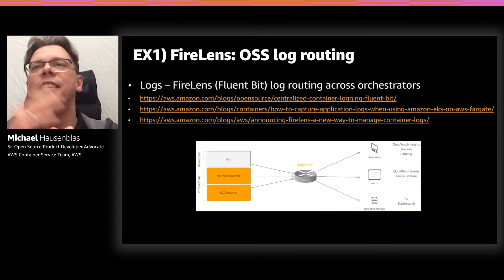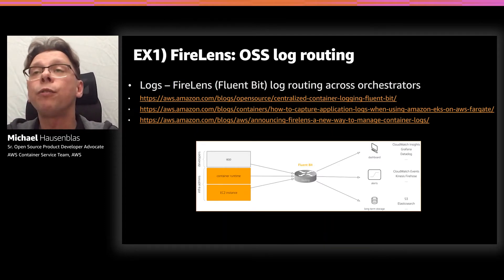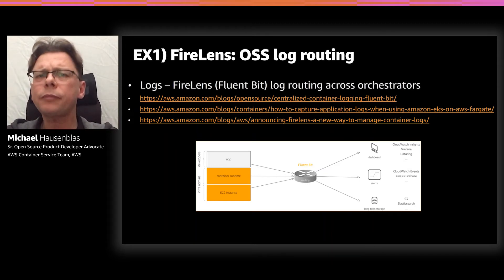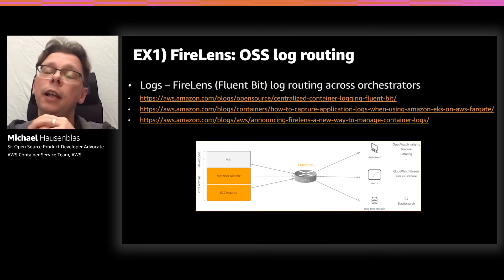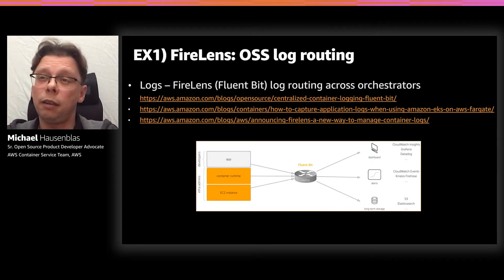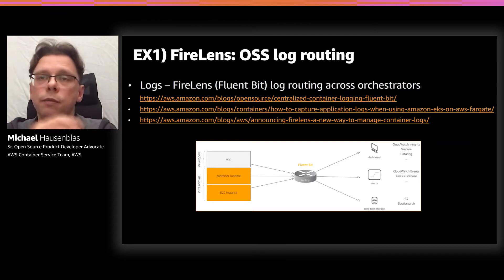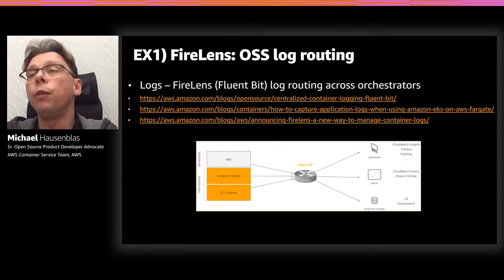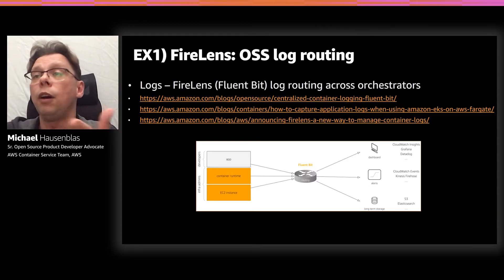The first example — and you can check out the linked blog post — is a project called FireLens, built on the open source projects FluentD and FluentBit. In a nutshell, it's a log router. Imagine parts of your infrastructure or application producing logs, and you want to decide where those logs should go. For example, a Kubernetes application in a certain namespace should log to S3 or Kinesis. FluentBit does that, and we've made it usable so you have the freedom to decide where to route and consume these logs.